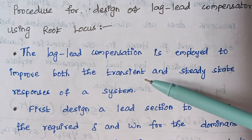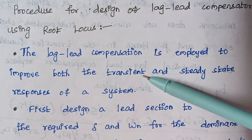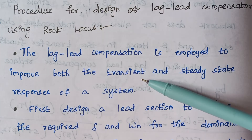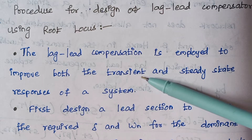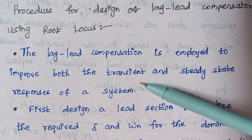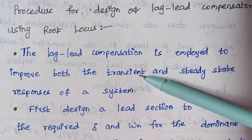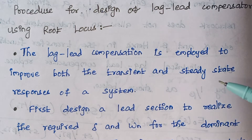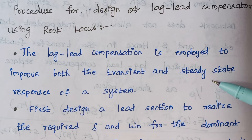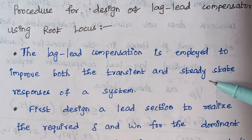What is meant by transient response? Whenever the input gets varied continuously, the respective output of the system is said to be transient response. Steady-state response refers to a given steady input where the respective output is known as steady-state response.